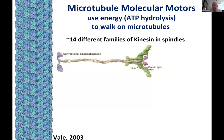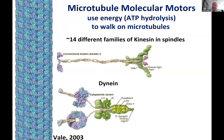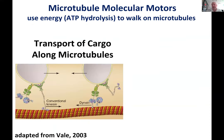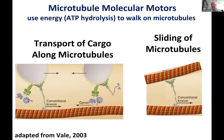In addition to growing and shrinking using energy, there are also molecular motors which are very important for the spindle and for self-organization of microtubules more broadly. Kinesin is one type of motor — there are 14 different families of kinesins that play roles in spindles. There is also dynein. These molecular motors hydrolyze ATP and use that to walk along microtubules, transporting cargo to the plus end (kinesin) or minus end (dynein). In the spindle and in neurons, sometimes the cargo a motor carries is another microtubule — which is very important for self-organization.